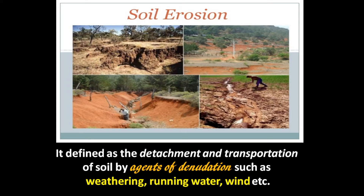Good morning. Today we will start the soil erosion section of the chapter on soil resources. This is the soil erosion diagram where different pictures of soil erosion are present. Soil erosion may be defined as the detachment and transportation of soil by agents of denudation — denudation agents include weathering, running water, wind, etc.